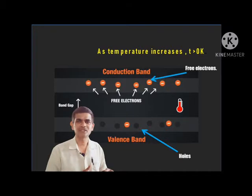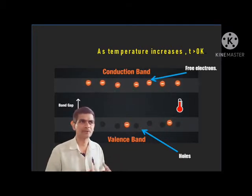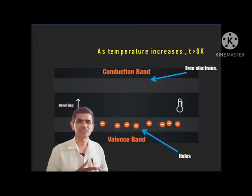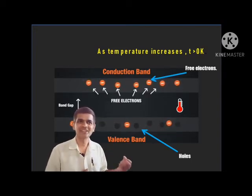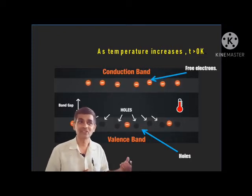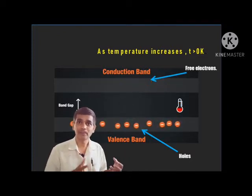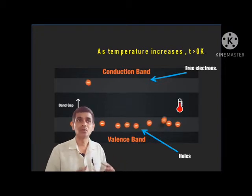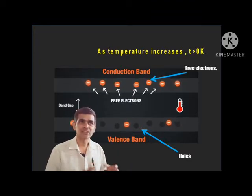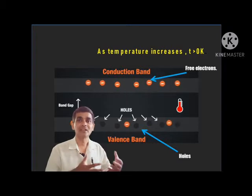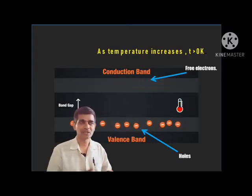As temperature increases above zero Kelvin, a few electrons in the valence band jump to the conduction band. As a result, few vacancies are created in the valence band. That vacancy created in the valence band is virtually a positive charge and is called a hole. Whatever electrons jump to the conduction band are called free electrons. As temperature increases, this will happen in case of semiconductors.